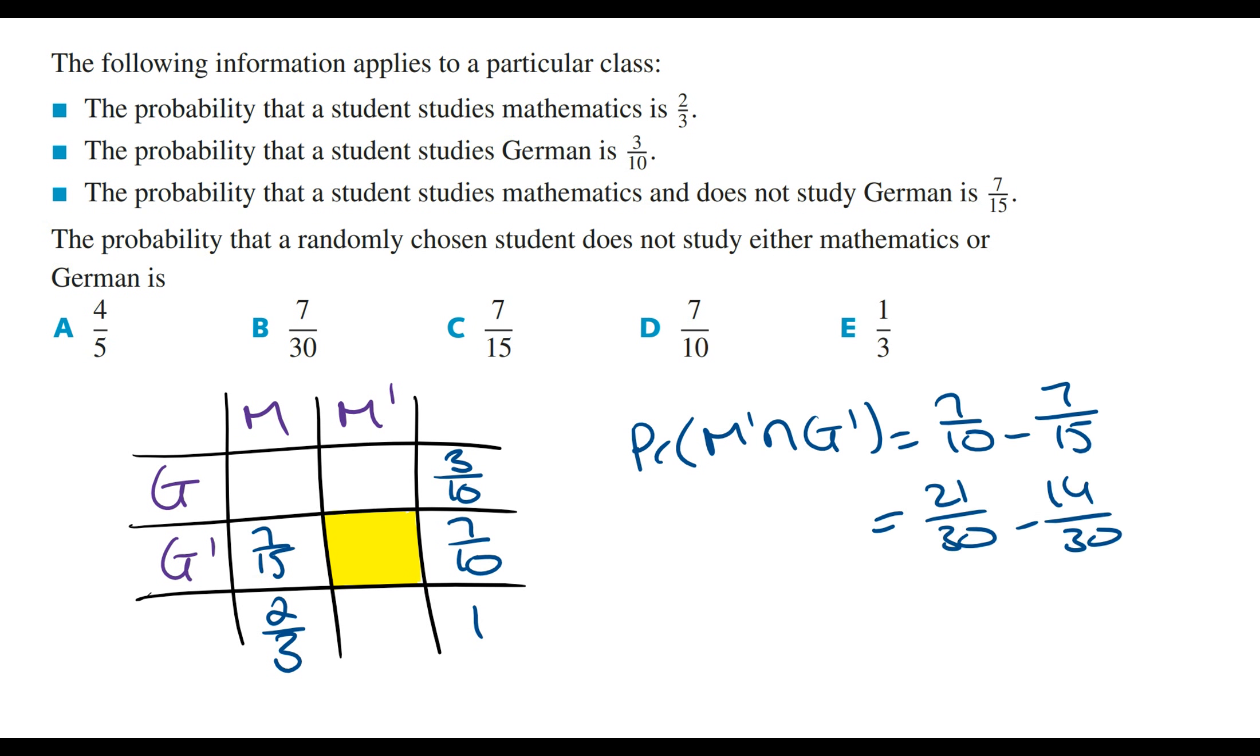...which is equal to 7 on 30. And so this is going to equal 7 on 30, giving us the answer option B for this question.